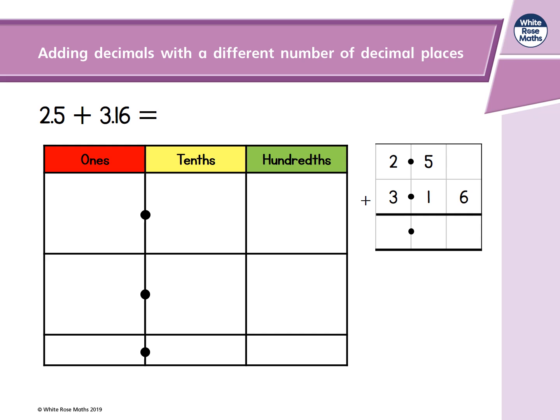Let's have a look at an example: 2.5 add 3.16. The first number has ones and tenths, but the second number has ones, tenths and hundredths. Let's represent both of those numbers in the place value grid using counters.